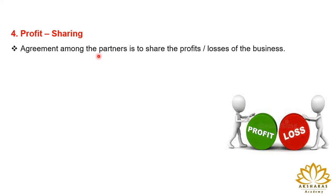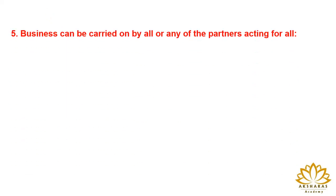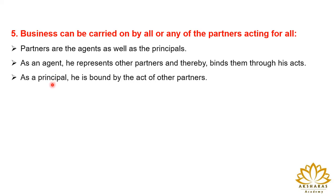The next feature is profit sharing. The partners agree to share the profits and losses arising from the business. However, there may be a provision in the partnership deed that a particular partner or partners will not share the losses — they will take the profits but not the losses. The next feature is that business can be carried on by all or any of the partners acting for all. The partners are agents as well as principals among themselves. When they are agents, they represent the other partners and carry out the business, and the other partners are bound by the acts of the partner carrying out the business activity.